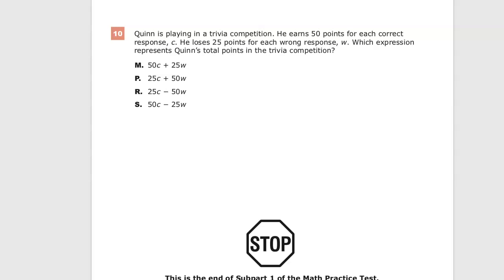The first thing we need to do is see if there are any connected components, and there absolutely are. 50 points every time there is a correct response, 25 points for every time there is a wrong response.